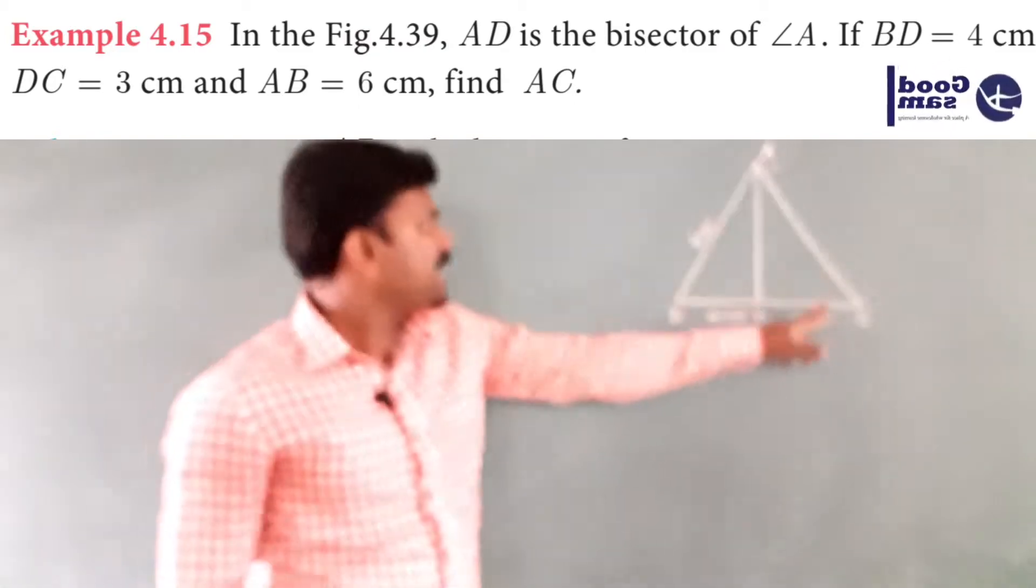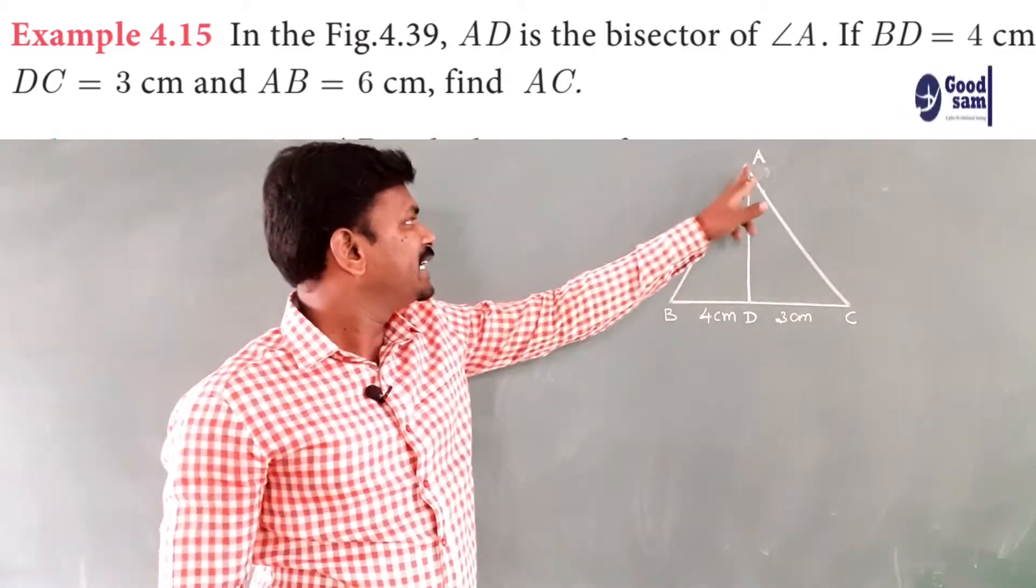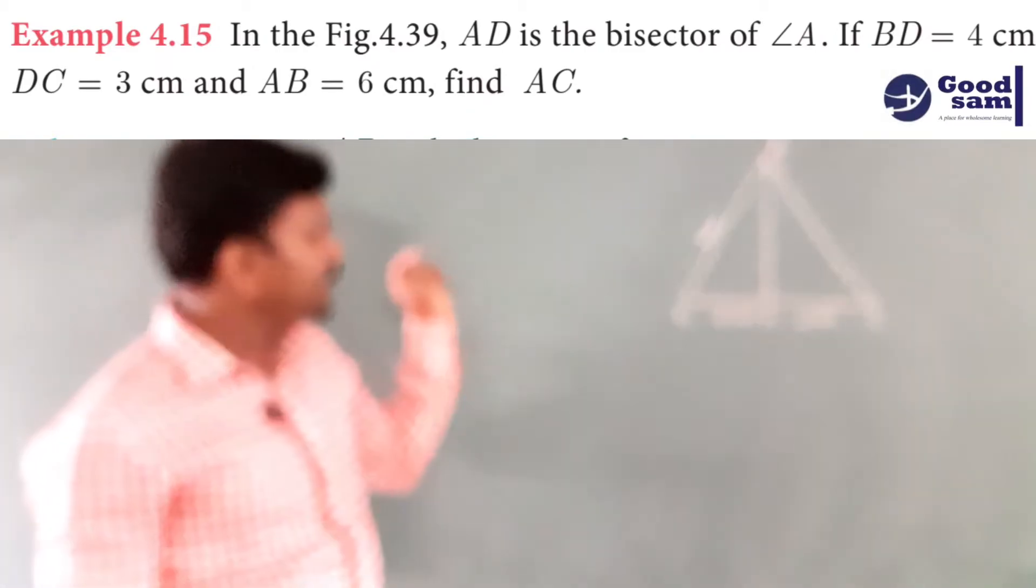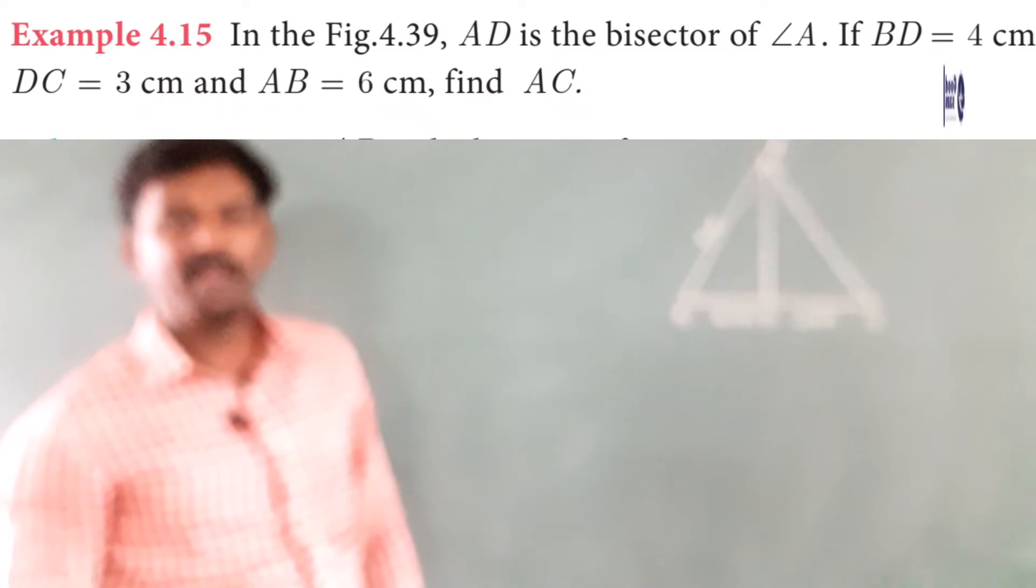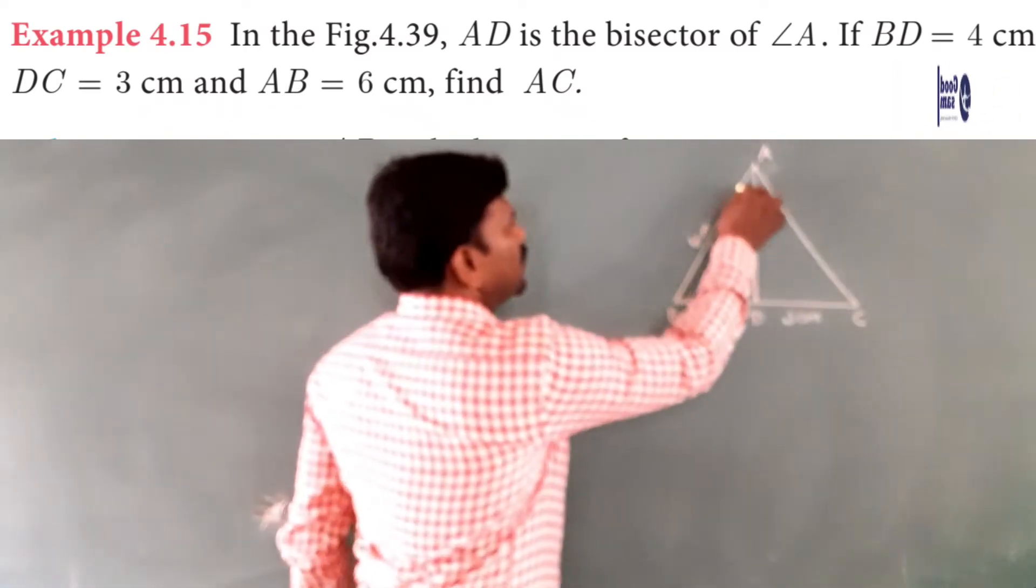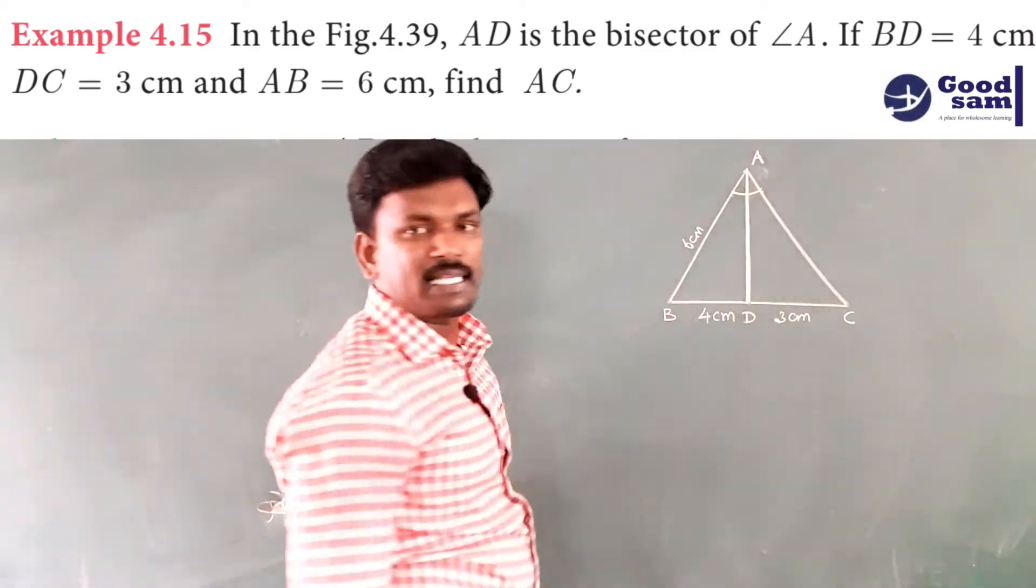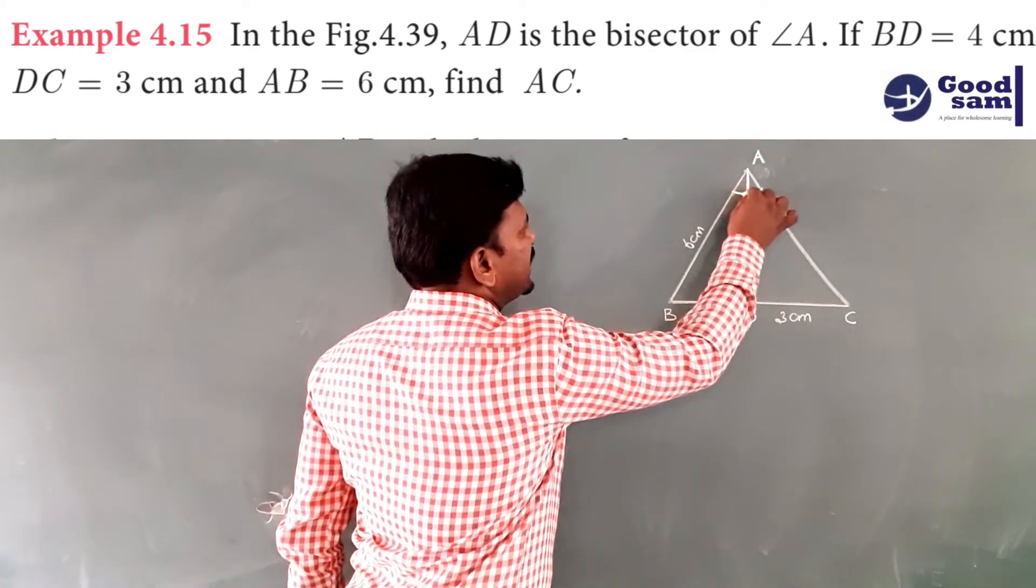In a triangle ABC, AD is an angle bisector of AB. Read the question. AD is an angle bisector of angle A. This AD is an angle bisector of this angle A.